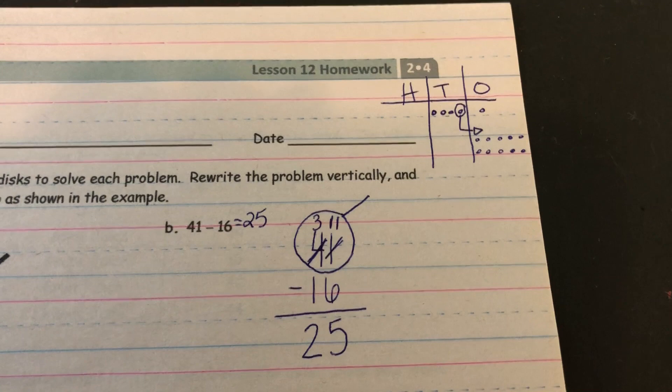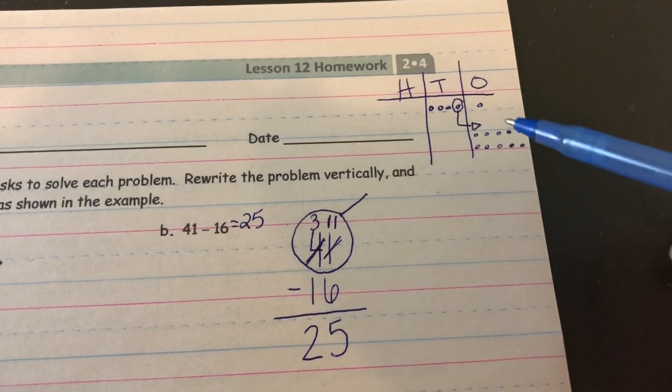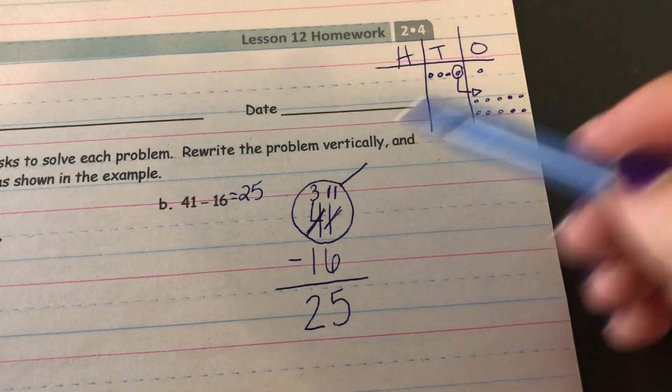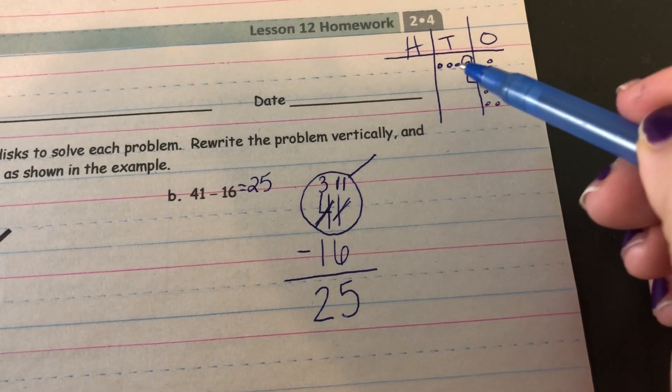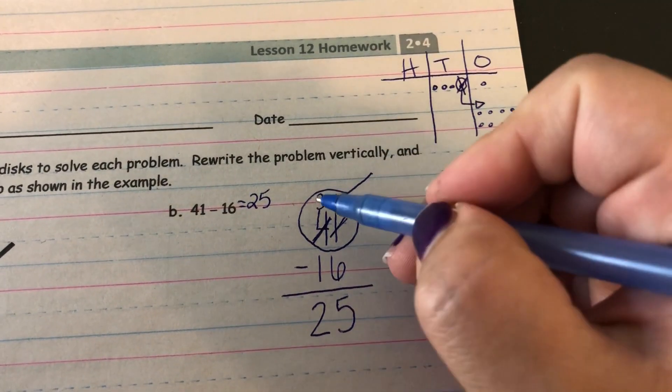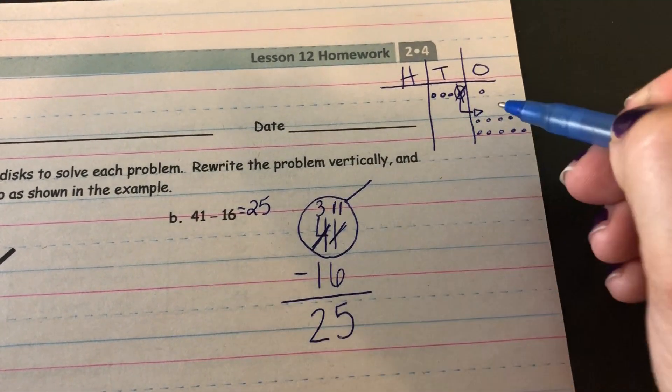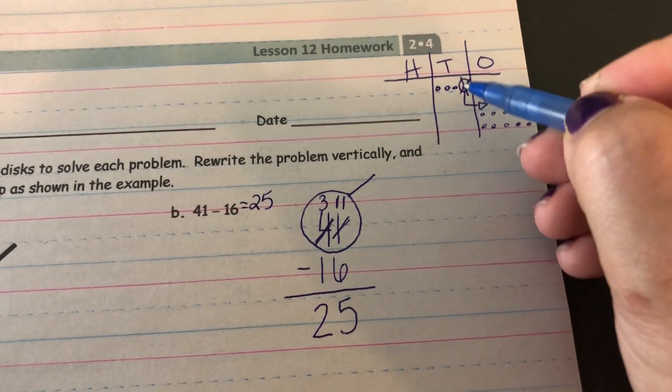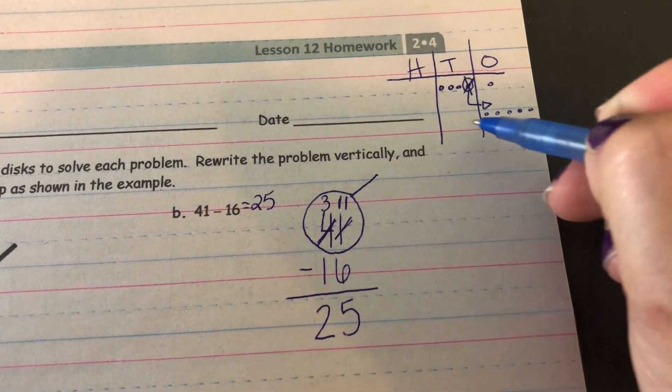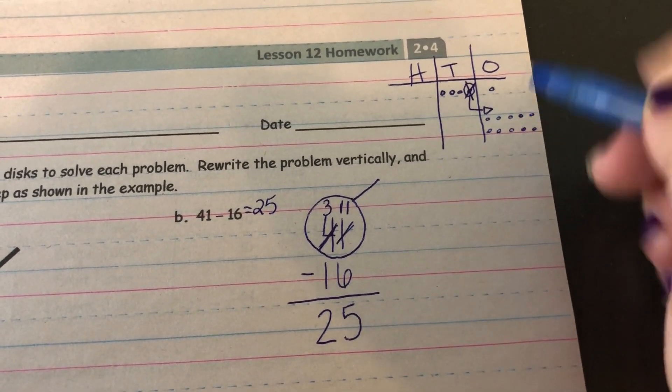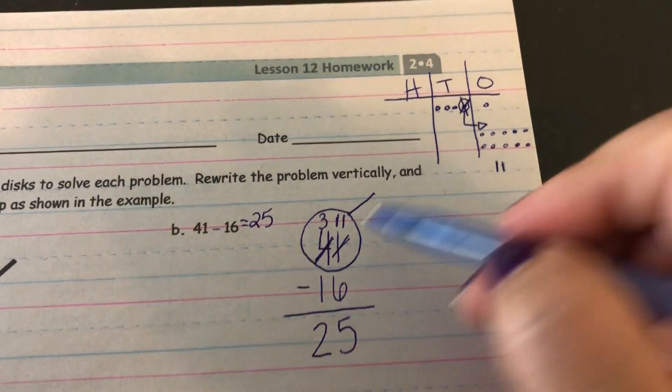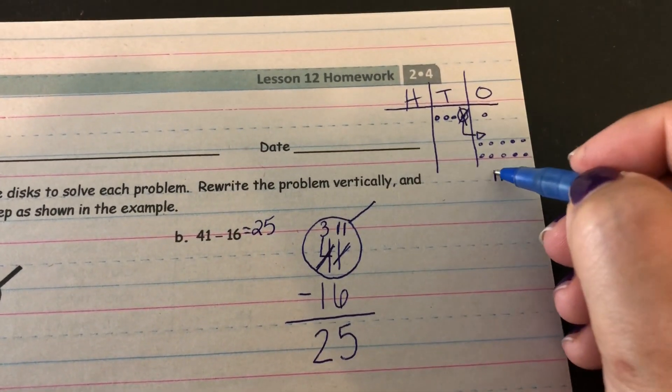Alright. So it's important that we understand that this step is the same as this step. I had four 10s. See, I had four, but I unbundled. So now I only have three. I had one one, but I just unbundled that 10 and got 10 more ones. So now I have 11. See this 11 ones right here, same as right here.